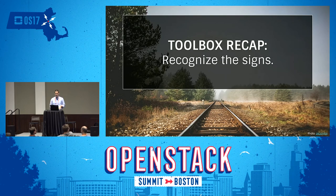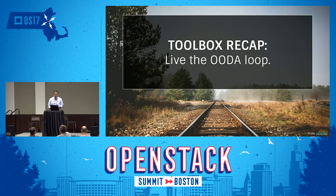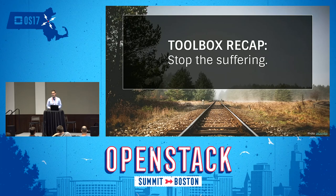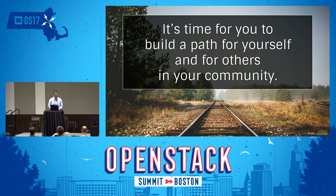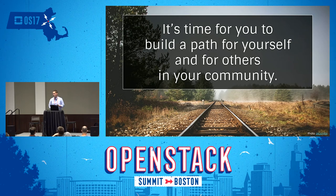To recap: first, be able to recognize the signs of imposter syndrome in yourself and in others. Then find a way to live the OODA loop and teach other people how to live it. Finally, stop the suffering — only the person suffering can fix it; you can help them get there but you can't take them there. Build a path for yourself and for others in the community: it'll improve diversity, improve the experience of contributors, bring new contributors on board, and you might even be able to merge with other projects.